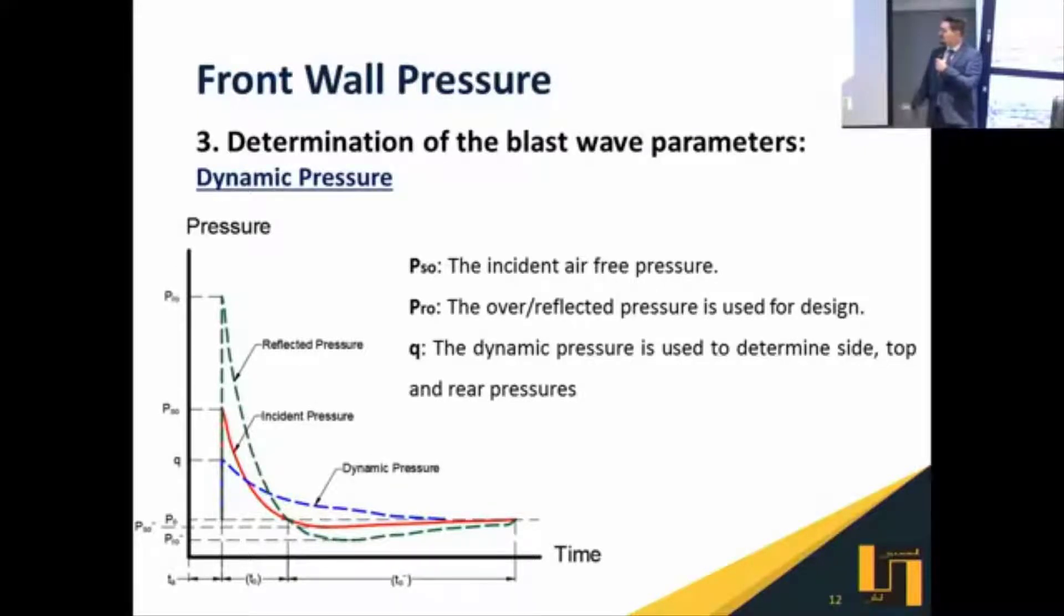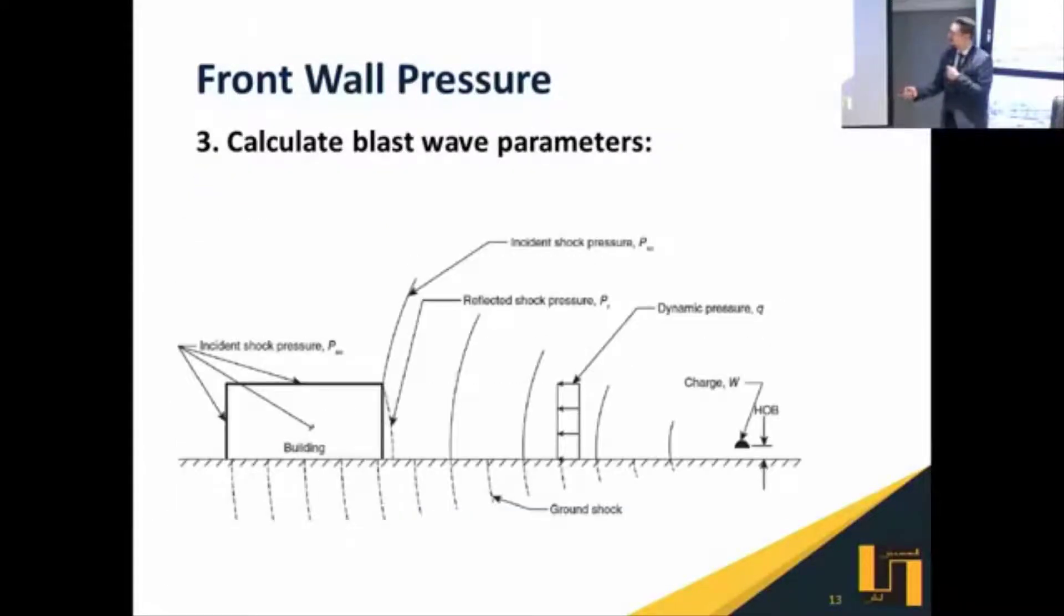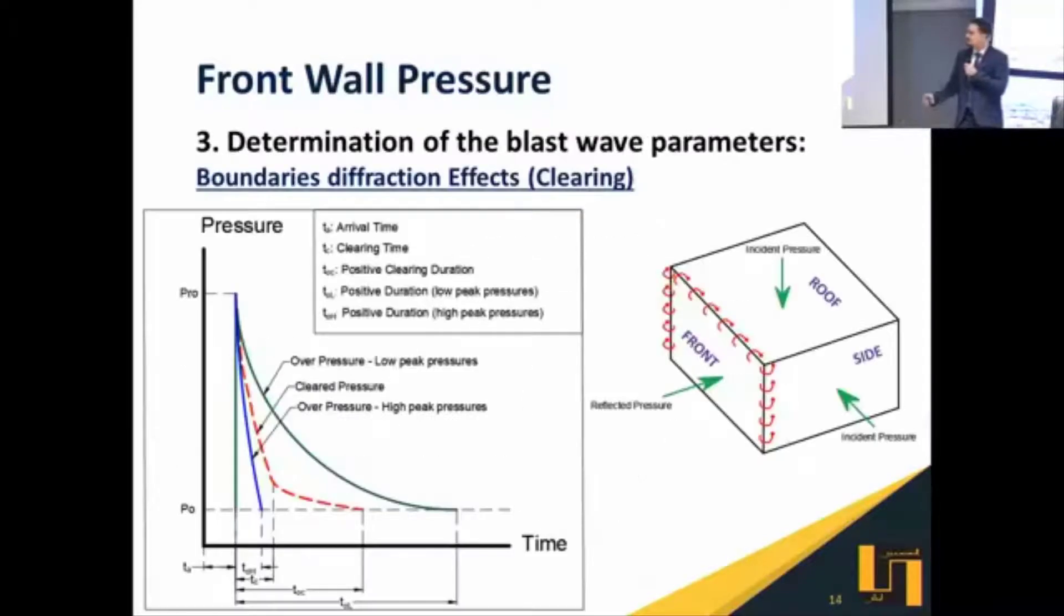The third type of pressure in our interest is what is called the dynamic pressure. After the propagation of the front wave, this front wave will drag the air particles behind it, and this will cause a pressure called the dynamic pressure. This is like a wind effect. This is a sketch showing different types of waves: the incident, the dynamic pressure, and the reflected pressure.